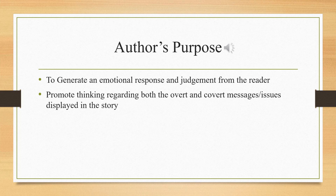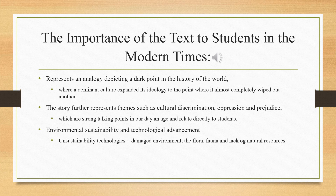The story has purposely been written and illustrated to generate an emotional response from the reader and prompt thinking regarding both the overt and covert messages displayed by the text. The use of broader written statements prompts thinking both inferentially and critically, while specific imagery reinforces dominant ideas such as cultural difference or discrimination. The author has done this to connect with the reader and engage them, making them want to look deeper into the overarching issue of the tale. The importance of the text to students today is that it represents an analogy depicting a dark point in world history where a dominant culture expanded its ideology to the point of almost completely wiping out another, and its themes of cultural discrimination, oppression and prejudice directly relate to students.